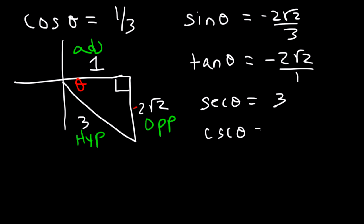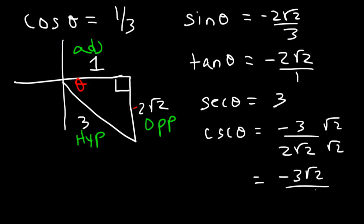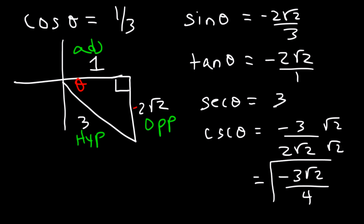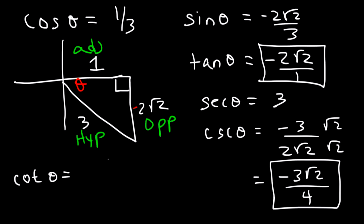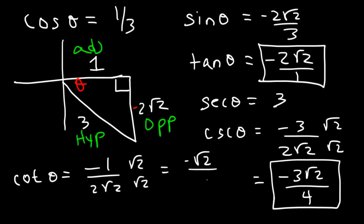Cosecant is the reciprocal of sine, so it's going to be negative 3 over 2 square root 2. And we need to rationalize it, so this becomes negative 3 square root 2 divided by 2 times 2. The square root of 2 times the square root of 2 is 2, and 2 times 2 is 4. So cosecant is negative 3 square root 2 over 4. And cotangent is going to be the reciprocal of tangent, so it's negative 1 over 2 square root 2. Once we rationalize it, it's negative square root 2 over 4.